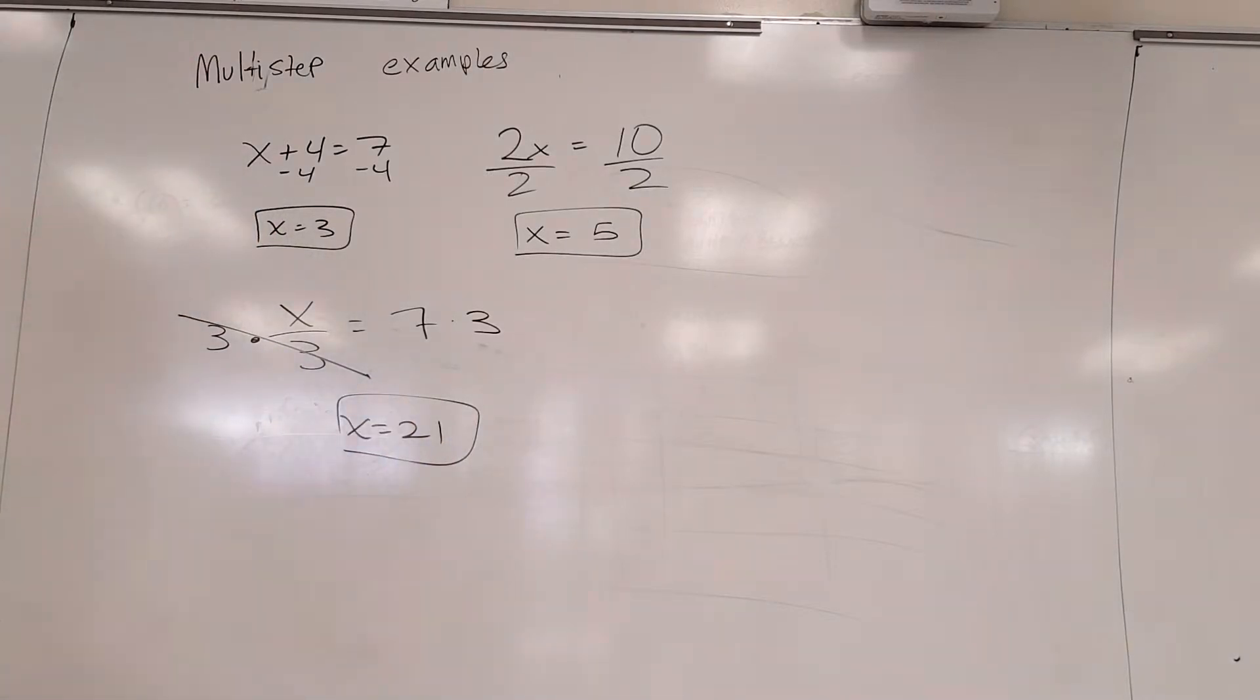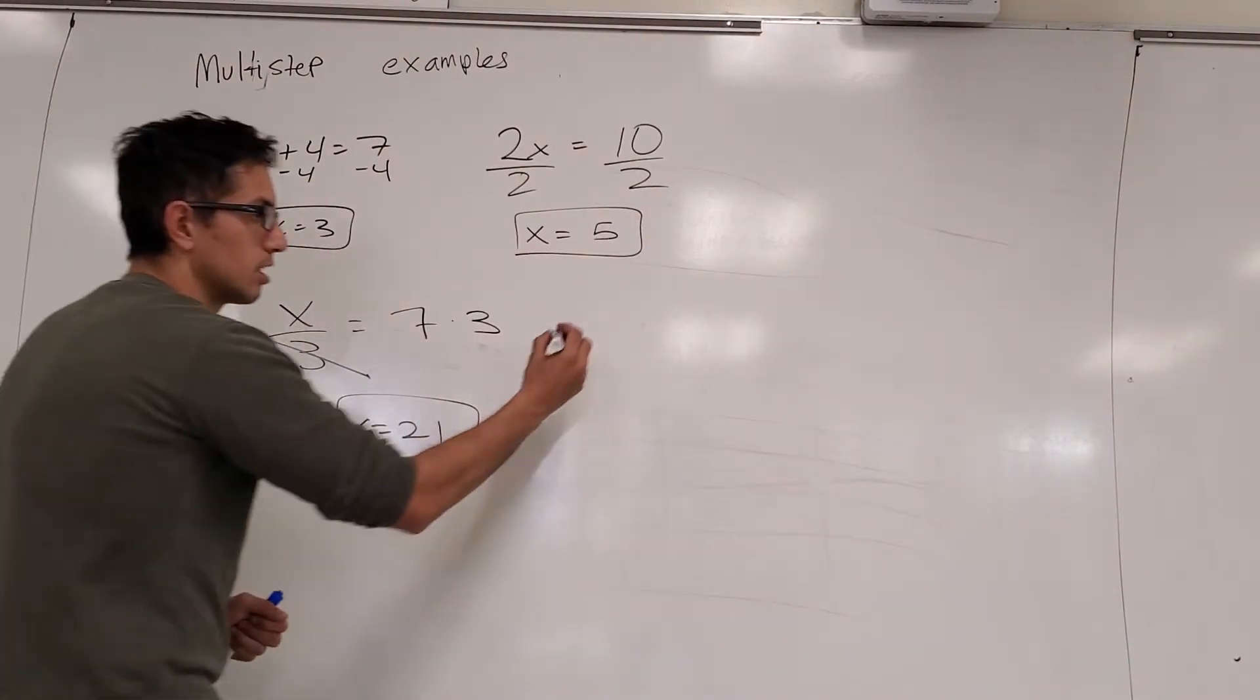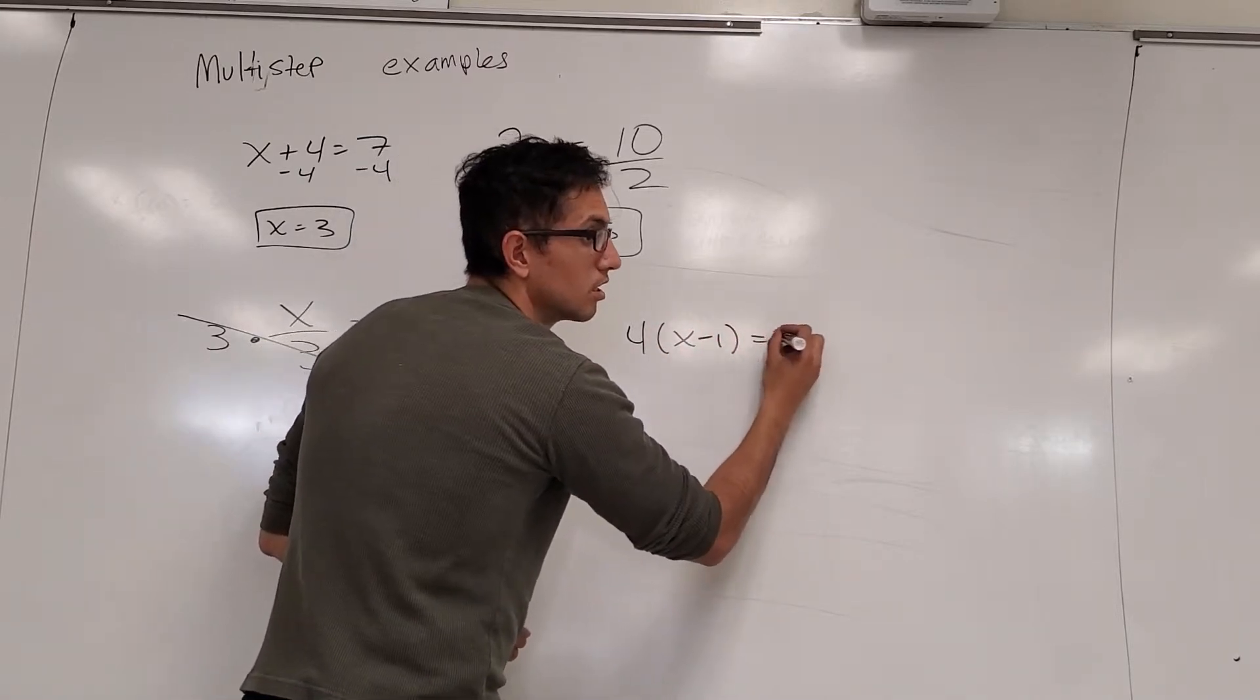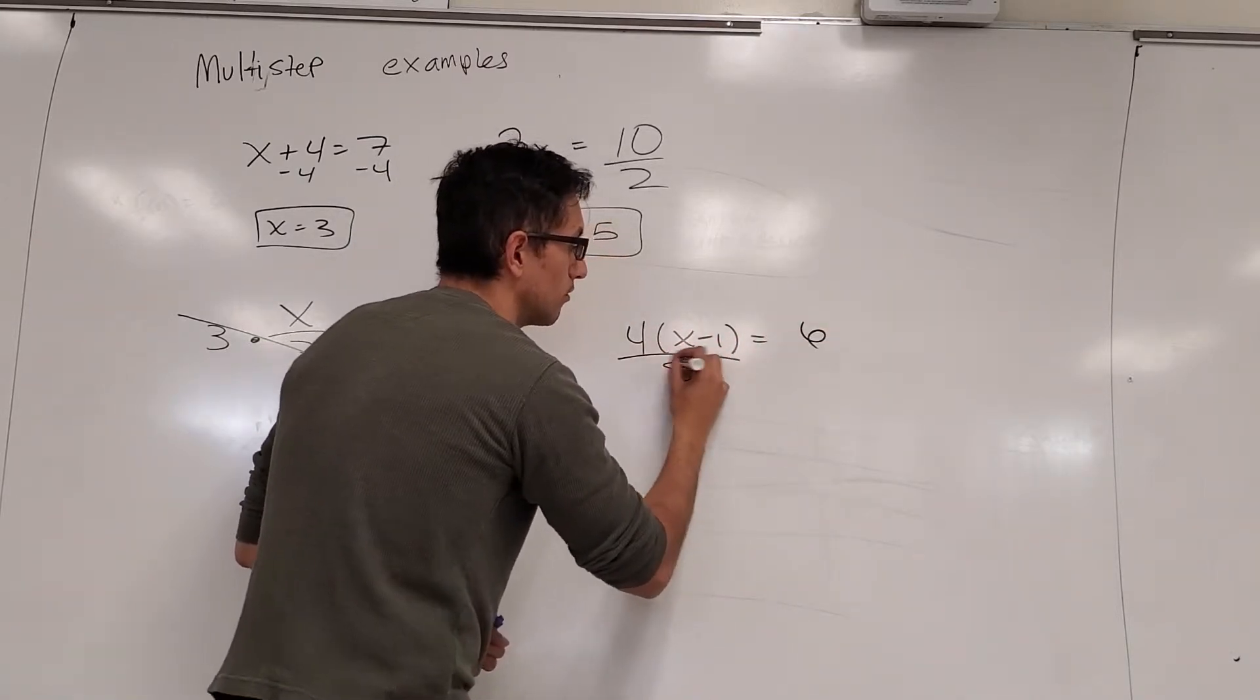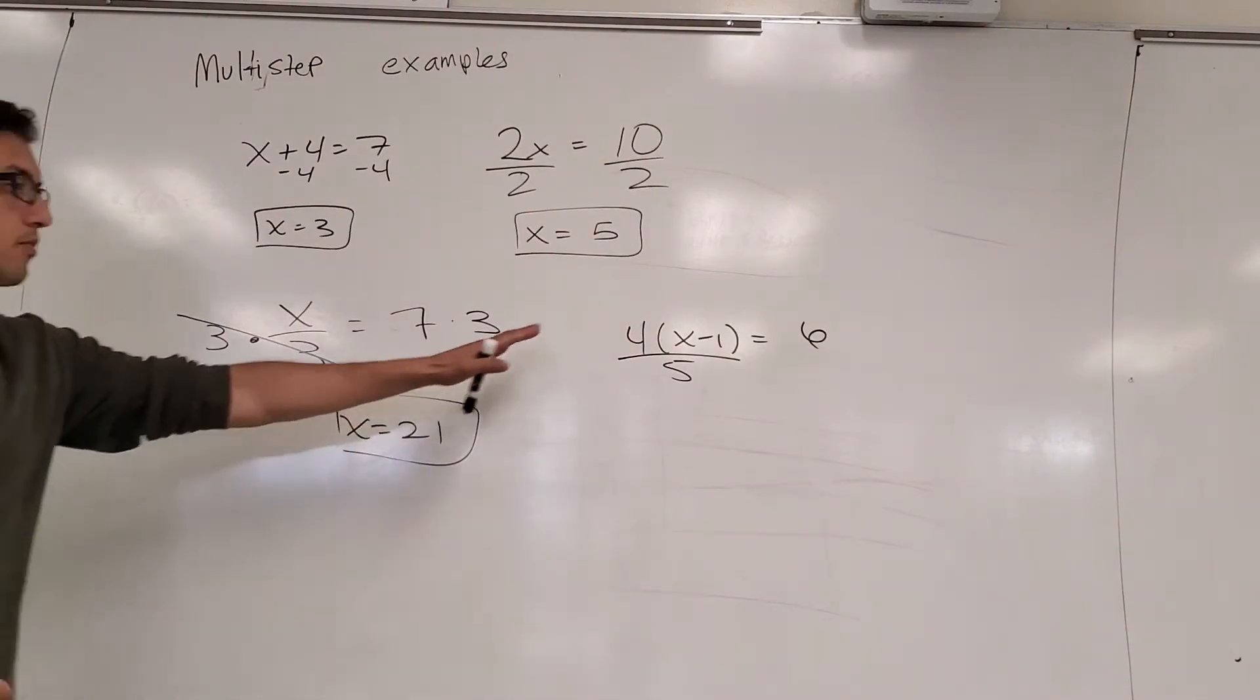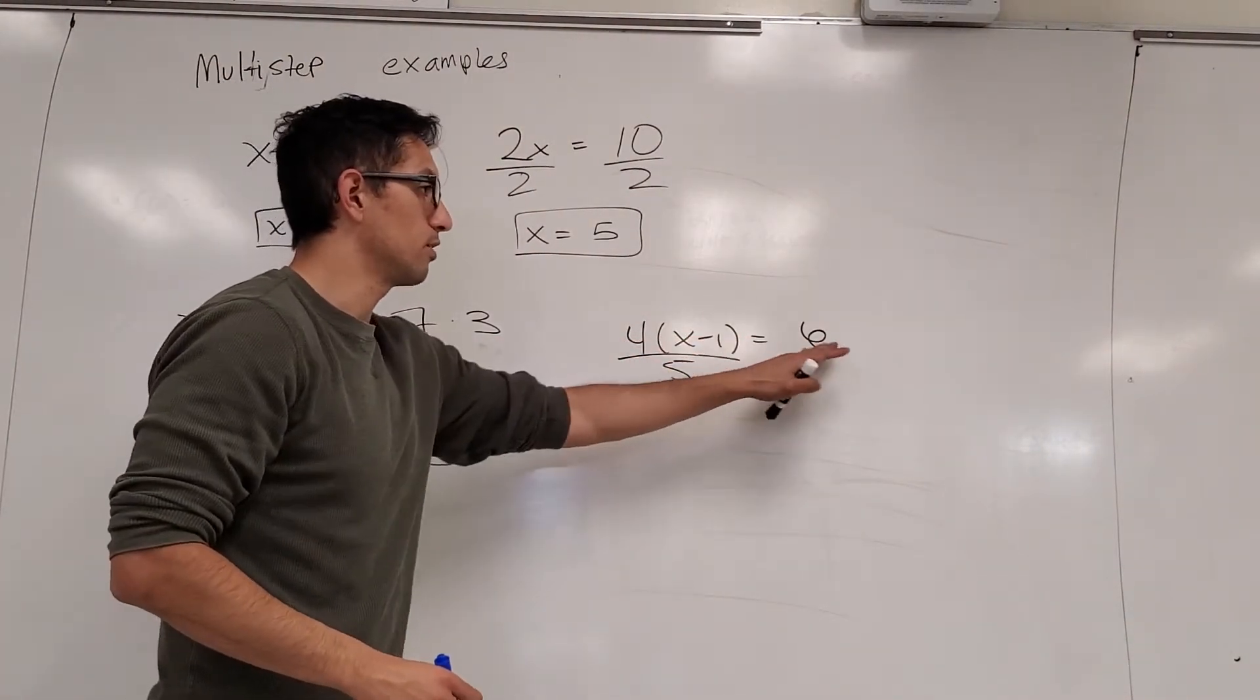So these are single step examples. We're going to go over a multi-step example now. 4x minus 1 equals 6 over 5. Alright, so here is the multi-step example. 4x minus 1 over 5 equals 6.